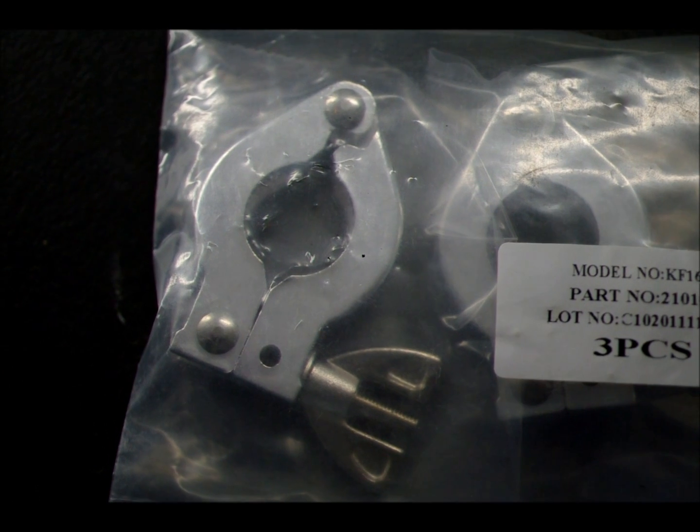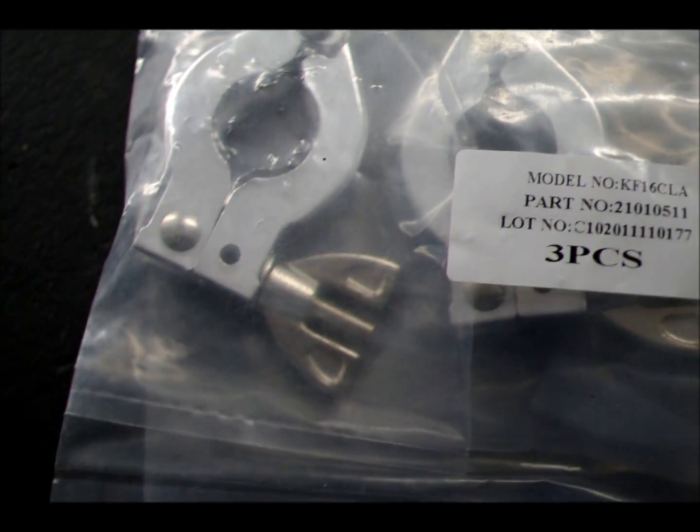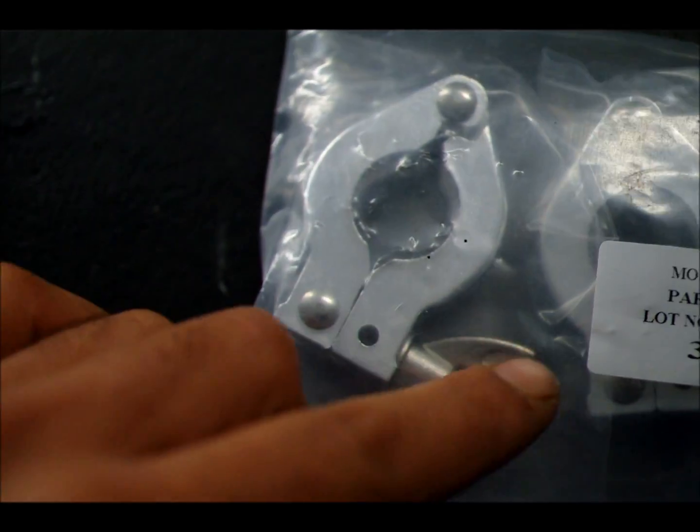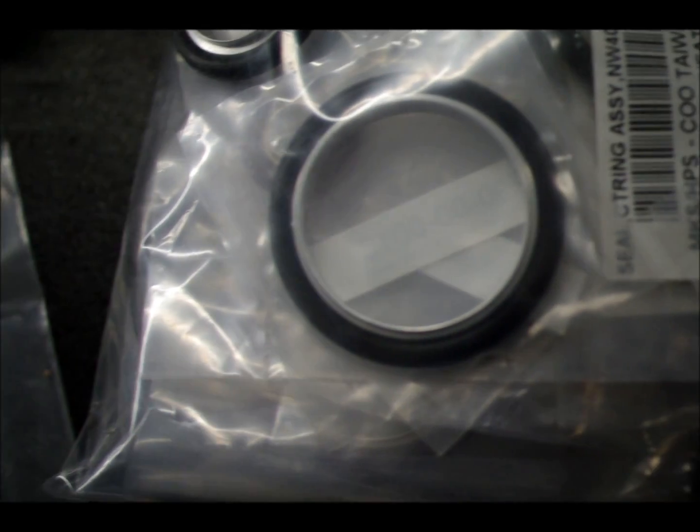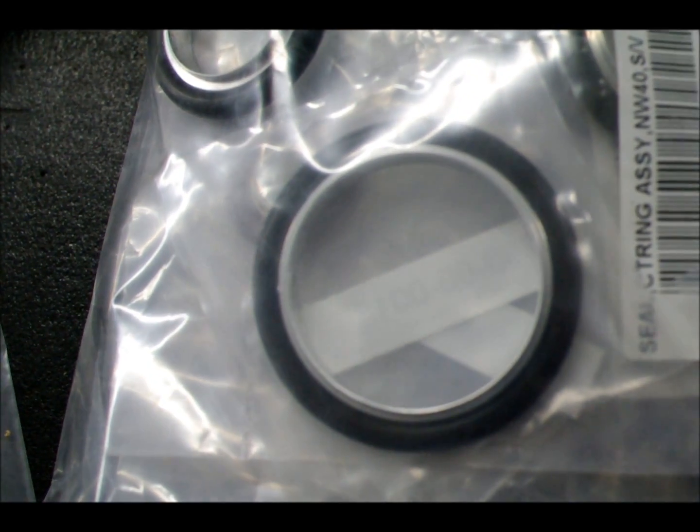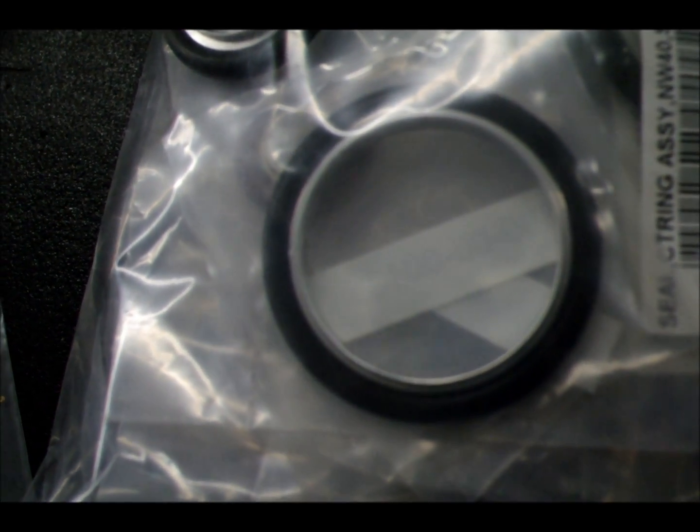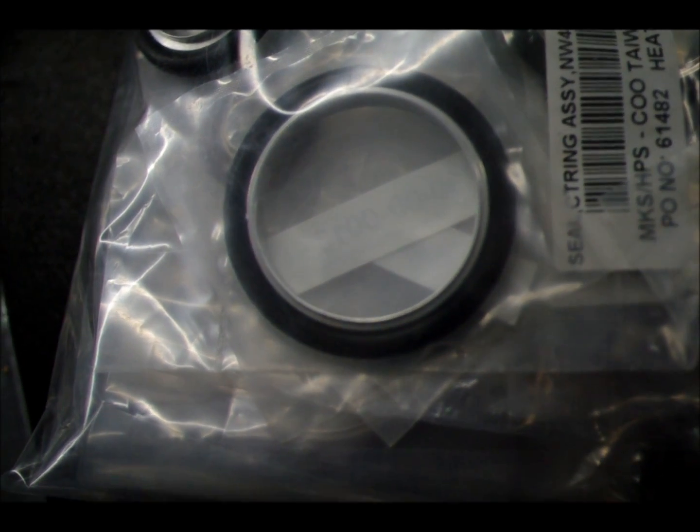A couple of other things I haven't shown you yet. There are bags of clamps here that connect all the KF flanges together. They swing open and have a wing nut that tightens it all up. Between each flange pair, we have these Viton O-rings and stainless steel centering rings. I've got a whole bag of them, more than enough for what we need.